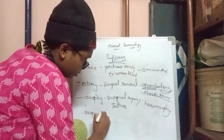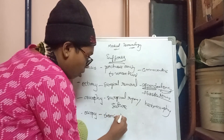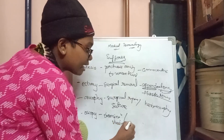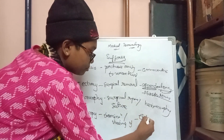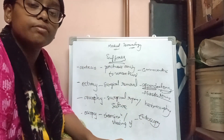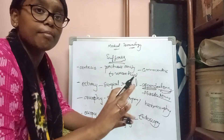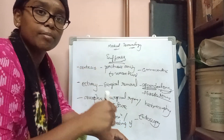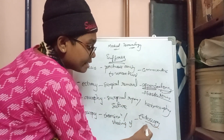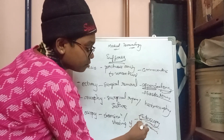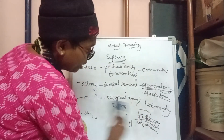The next suffix is '-oscopy,' which means examination or viewing — to examine a condition or situation. For example, 'endoscopy': the doctor sends a pipe through the nose into the body to examine parts like the esophagus, stomach, and intestines. 'Endo' means within, and 'scopy' means examine — endo can also be used as a prefix meaning sending within.